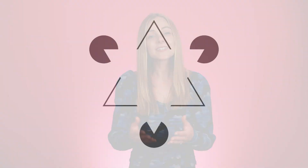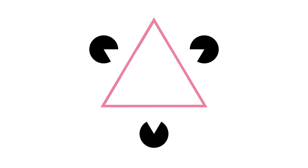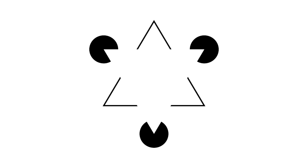To demonstrate how powerful and automatic Gestalt principles are in our perception, take a look at this image. What do you see? Why do you see two triangles — one white triangle laid on top of another and three black partially covered circles — rather than a series of lines and splodges?